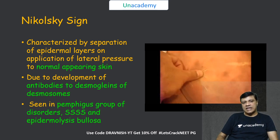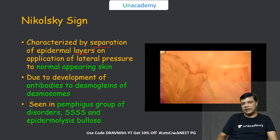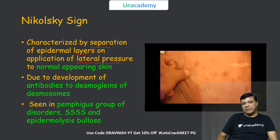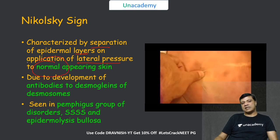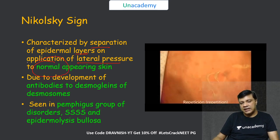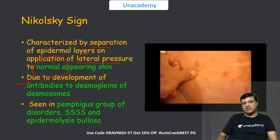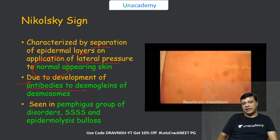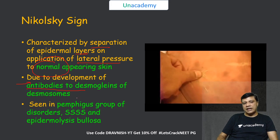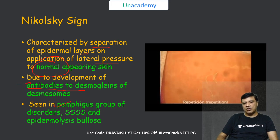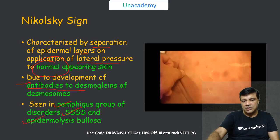The Nikolsky sign is the separation of the epidermal layer from the underlying dermis by application of lateral pressure on normal-appearing skin. The pathology is due to development of antibodies to desmoglein of desmosomes, and it can be a feature of the pemphigus group of disorders, staphylococcal scalded skin syndrome, and epidermolysis bullosa.